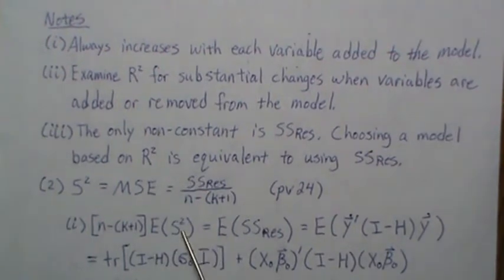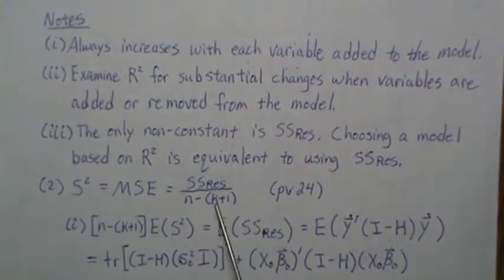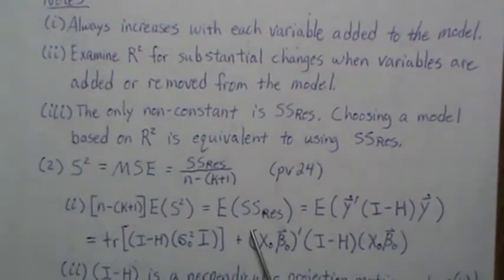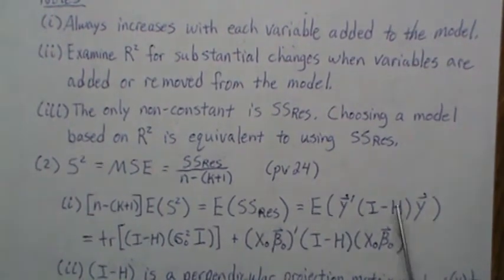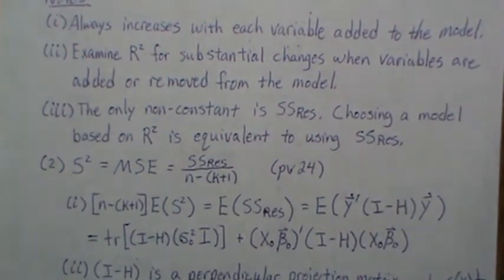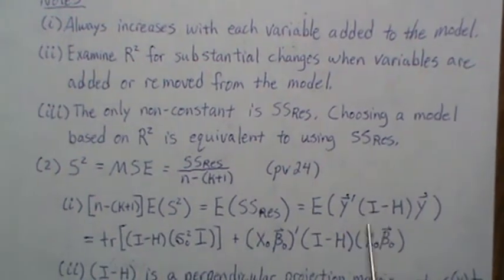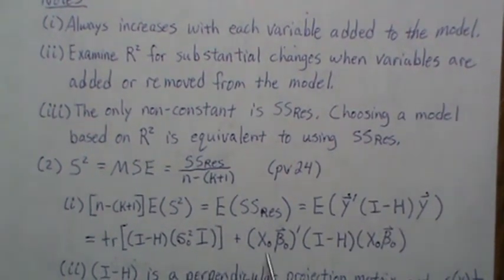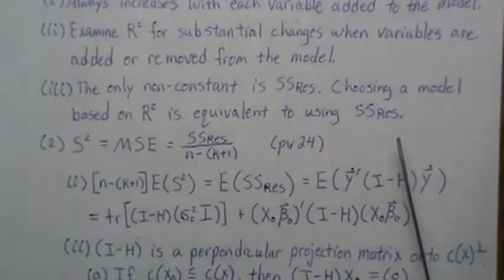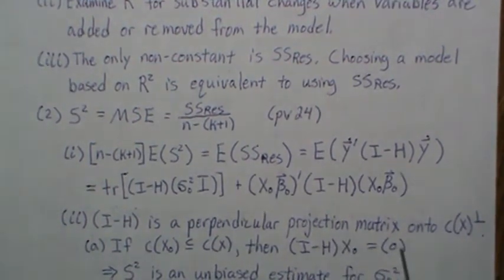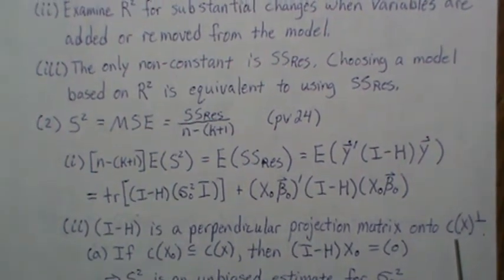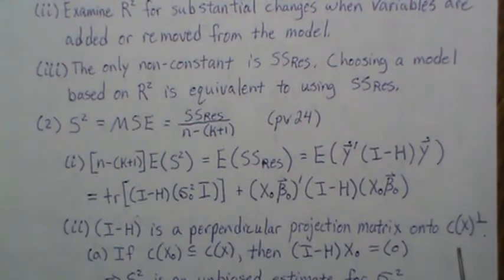If we take the expected value of S squared — multiplying by the appropriate constant — we look at the expected value of the sum of squares residual. In quadratic form, using the expected mean of a quadratic form, it equals the trace of the matrix (I minus H) times the true variance of Y, plus the true mean of Y times that matrix times the true mean. Note that I minus H is a perpendicular projection matrix onto the orthogonal complement of the column space of X.